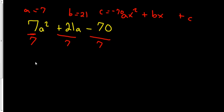7 divided by 7 is positive 1, so that leaves us A squared. 21 divided by 7 is positive 3, and negative 70 divided by positive 7 is negative 10.